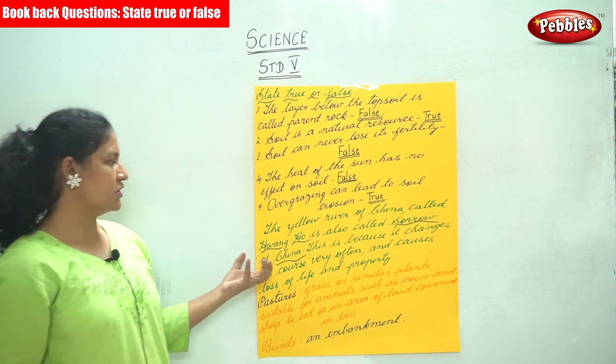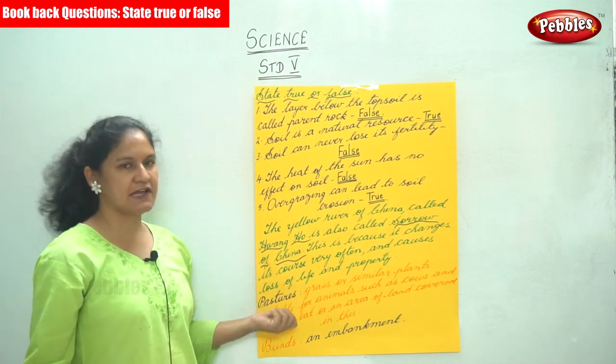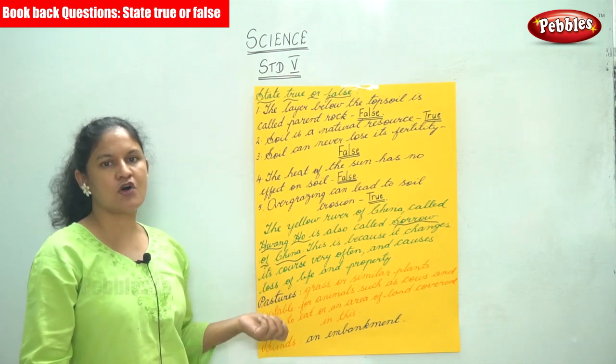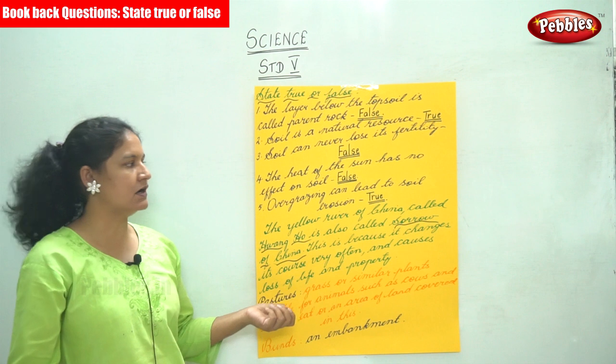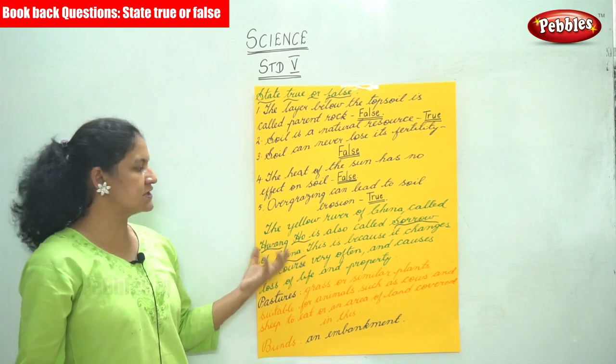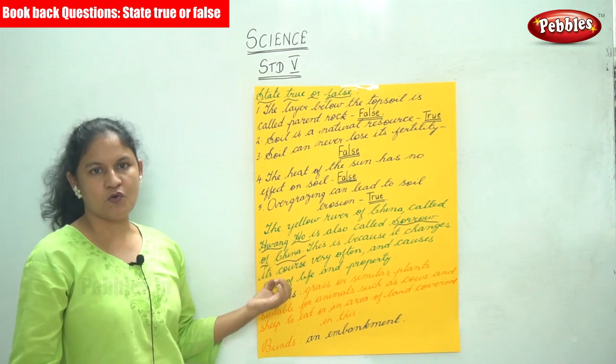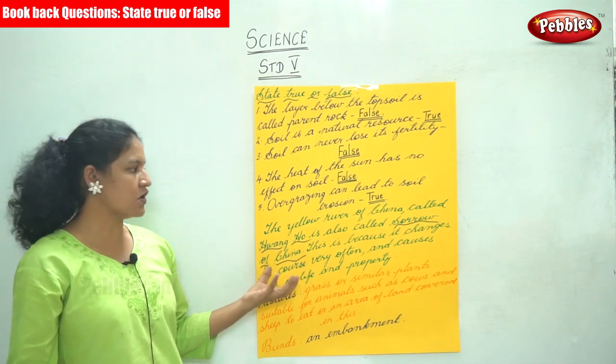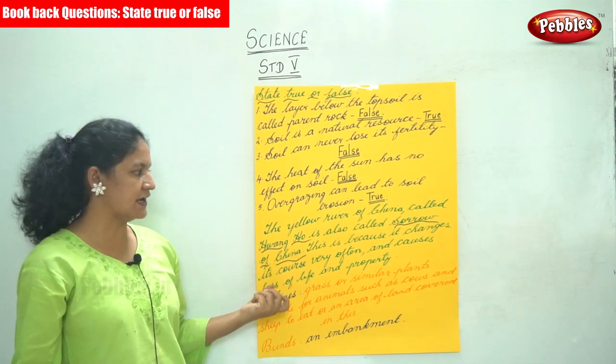So talking about the Yellow River — the Yellow River of China, called Hwangho, is also called the Sorrow of China.